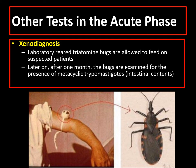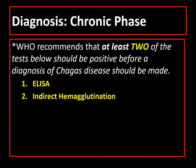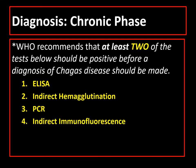During the chronic phase of infection, WHO recommends that at least two of the following tests should be positive before a diagnosis of Chagas disease is made, namely ELISA, indirect hemagglutination, PCR, and indirect immunofluorescence.